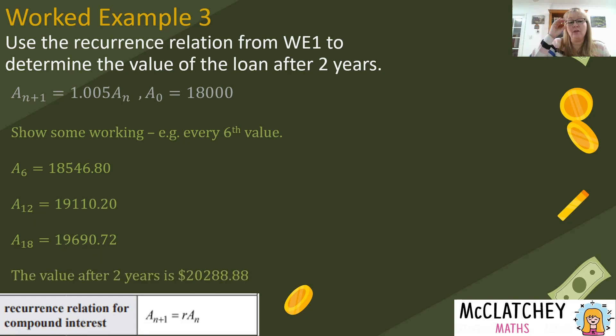Then you would show your 24th value and write that as a statement at this point because it is a worded problem once again. So write the value after two years is $20,288.88. You notice that I rounded each of these values to two decimal places as I was showing my working, but obviously I didn't round off on the calculator. I kept it going with all of the decimal places.